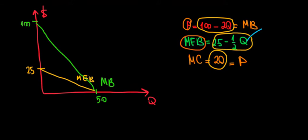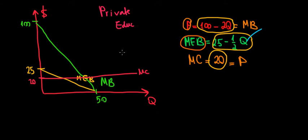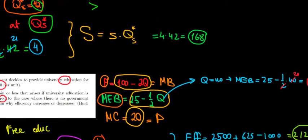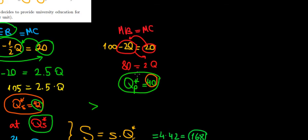This is our private education scenario. We also have to incur the marginal cost, which is 20, so the marginal cost is a flat line at 20. Because this is private education, we have a private optimal level, which we calculated two videos ago — that's 40 units of education.